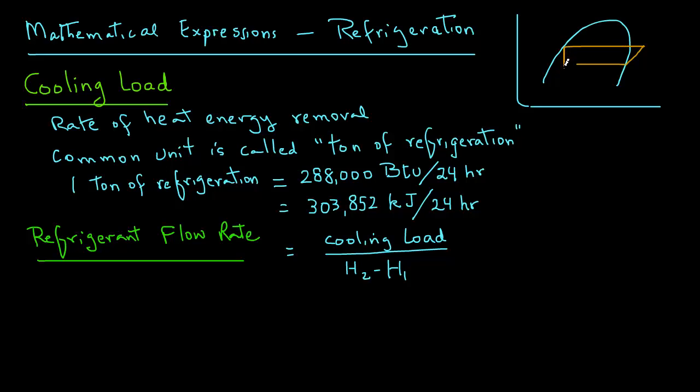And then we have H1, H2, and H3. So, the refrigerant flow rate is cooling load divided by H2 minus H1. That represents the heat being removed in the evaporator section.